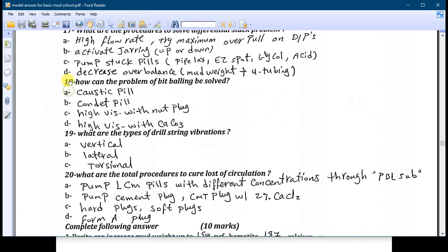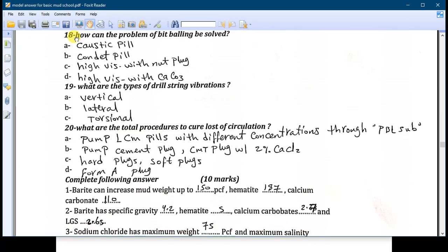Number eighteen: how can the problem of the bit balling be solved? Bit balling: you have to make at first caustic pill. Number B: conduit pill. Number C: high viscosity spot not pill. Number D: high viscosity with calcium carbonate, and the most effective one is the last one, high viscosity with calcium carbonate, because it makes sand blasting to the surface.